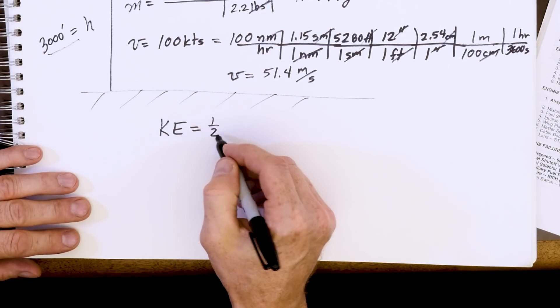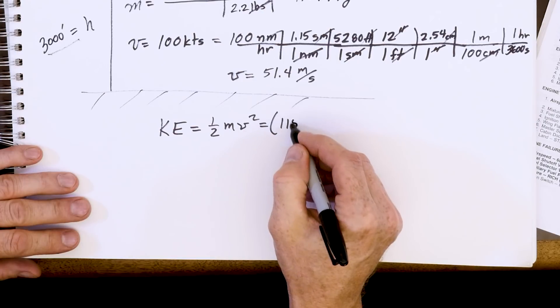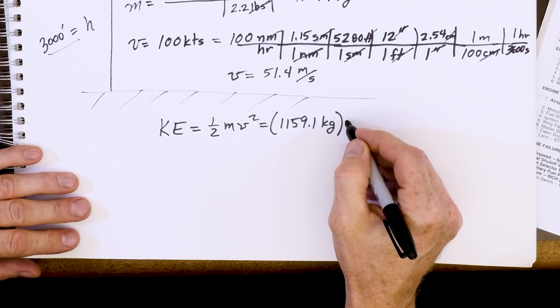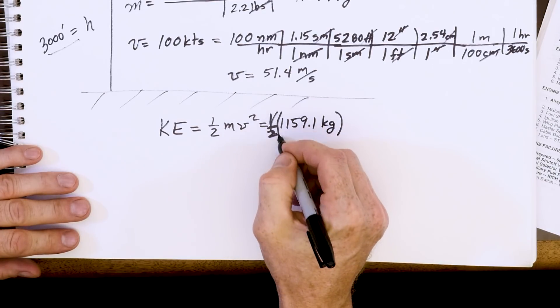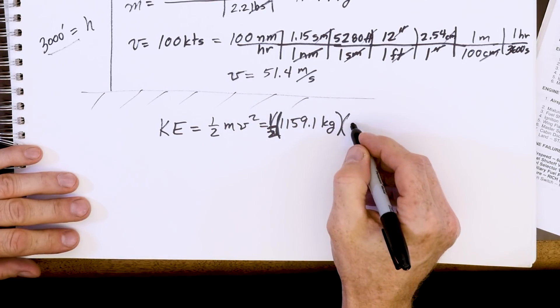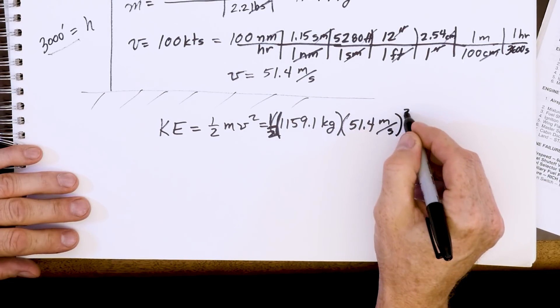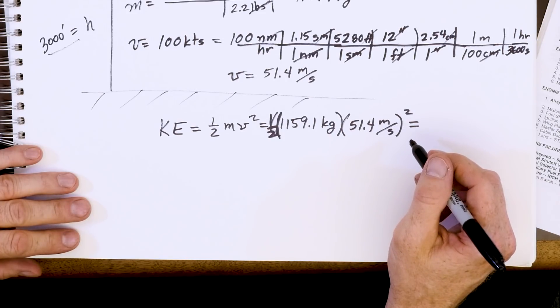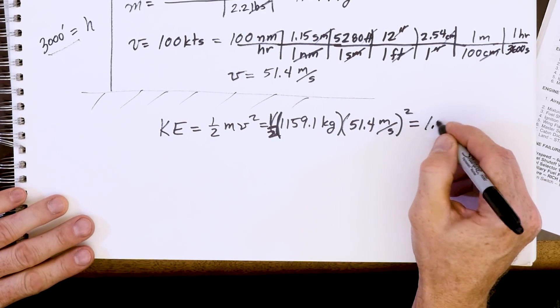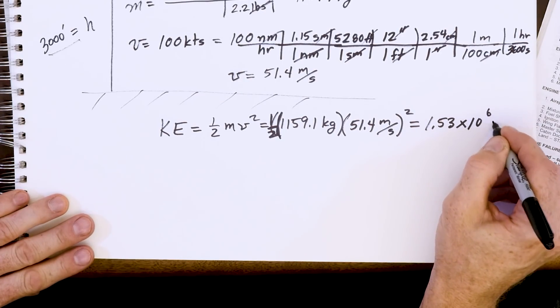KE equals one-half mv squared. We plug in our mass, 1159.1 kilograms. Whoops. One half. One half is in front of the parentheses. Times this 51.4 meter per second quantity squared. Everyone pause your video and crunch that in your calculator now. And I will write the number down, which turns out to be 1.53 times 10 to the sixth joules.